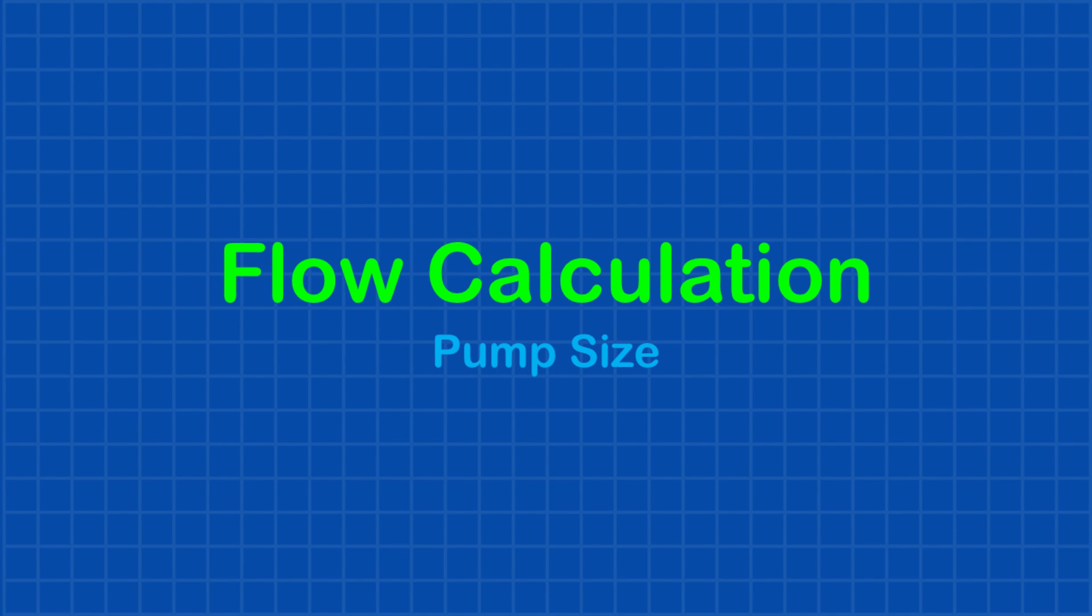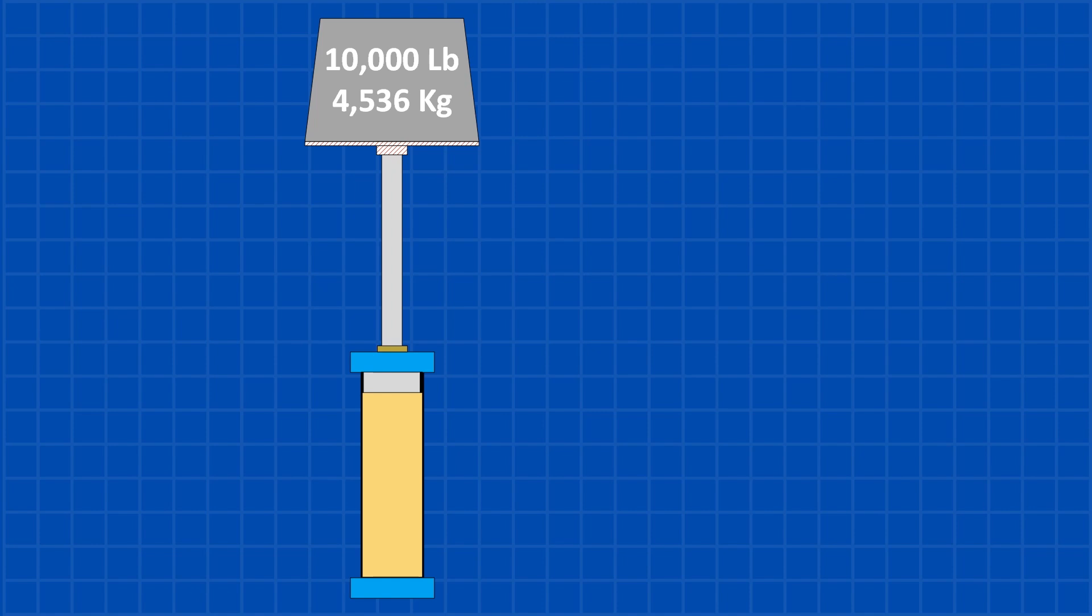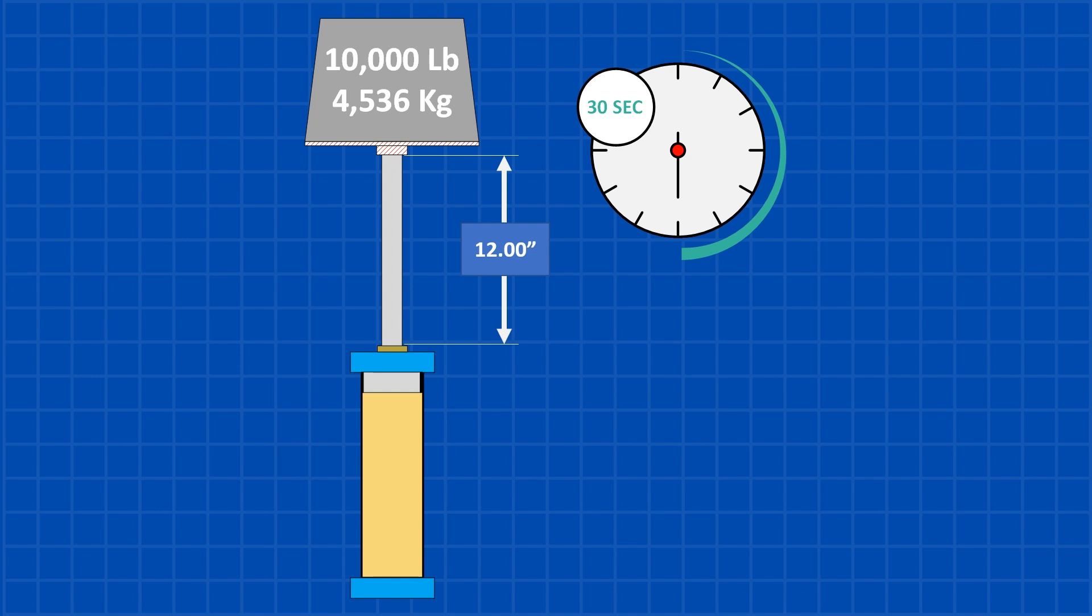Now, let's figure out the flow requirement so we can choose the right pump size. To calculate the flow, we need to know the stroke length and how long it takes for the cylinder to extend. Let's say the design has a 12-inch stroke and takes 30 seconds to fully extend. Now, let's figure out the flow we need. To do that, we need to calculate the volume first.